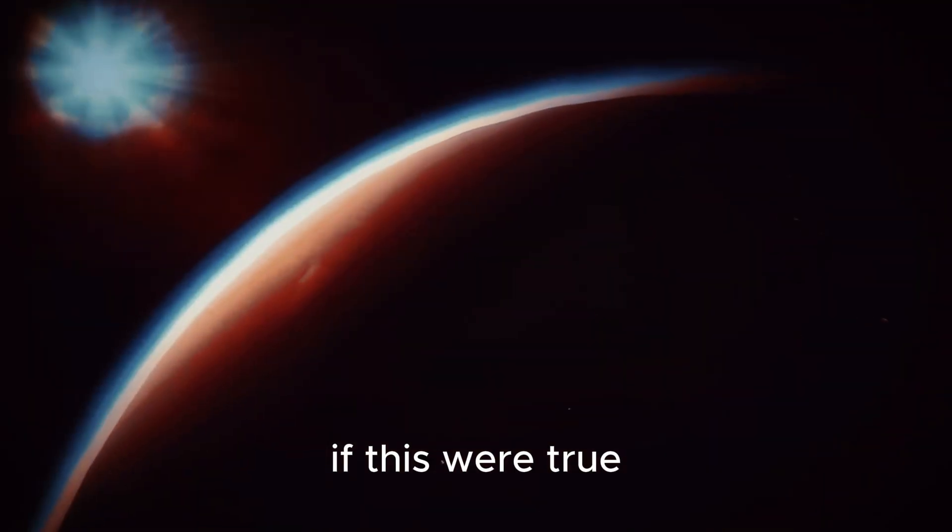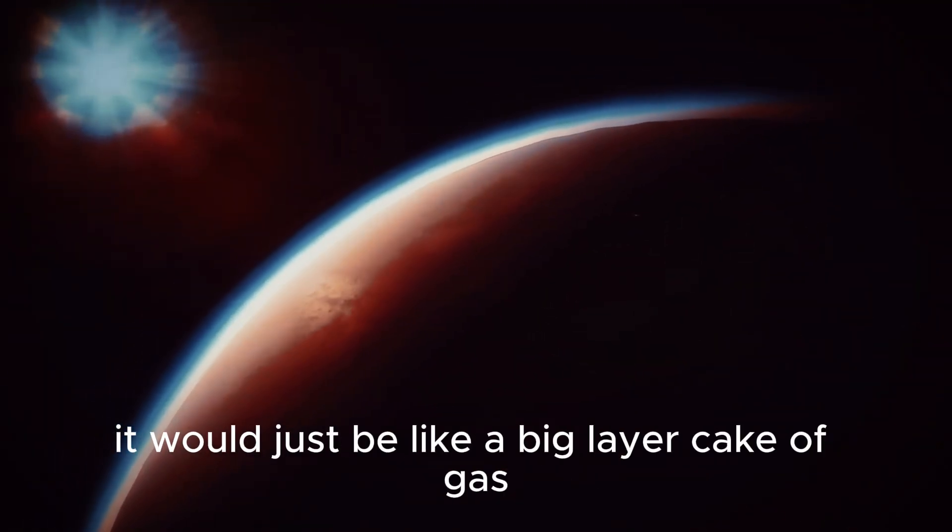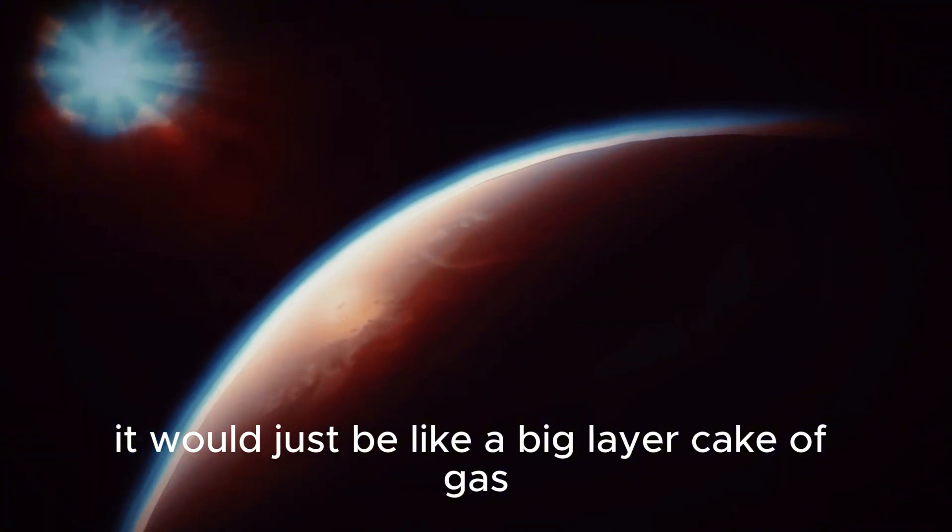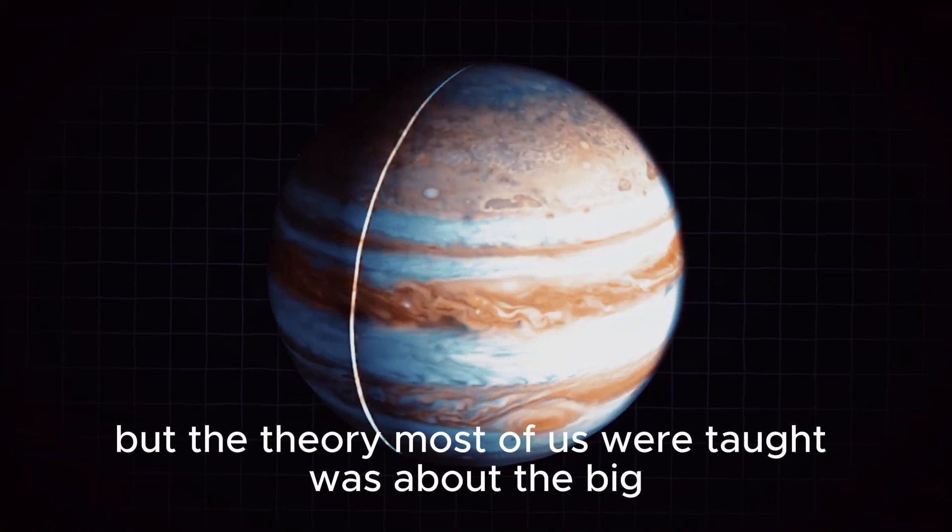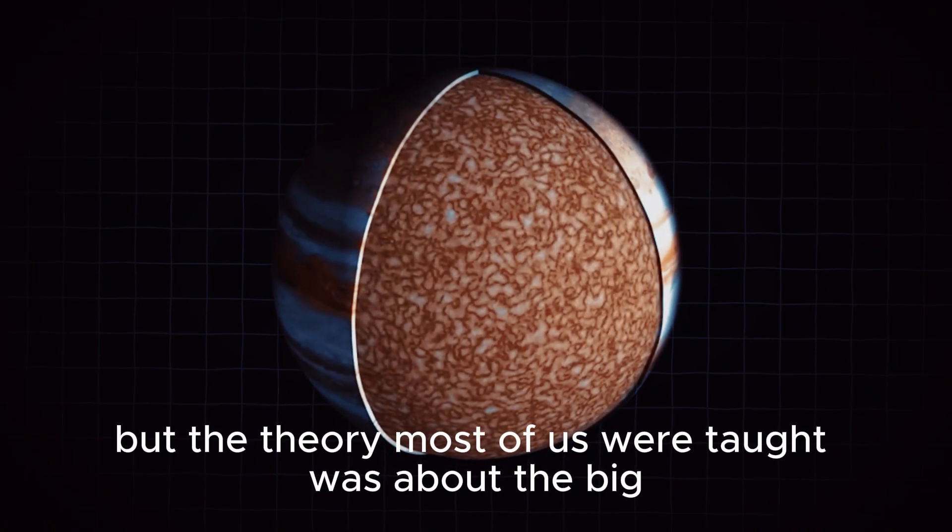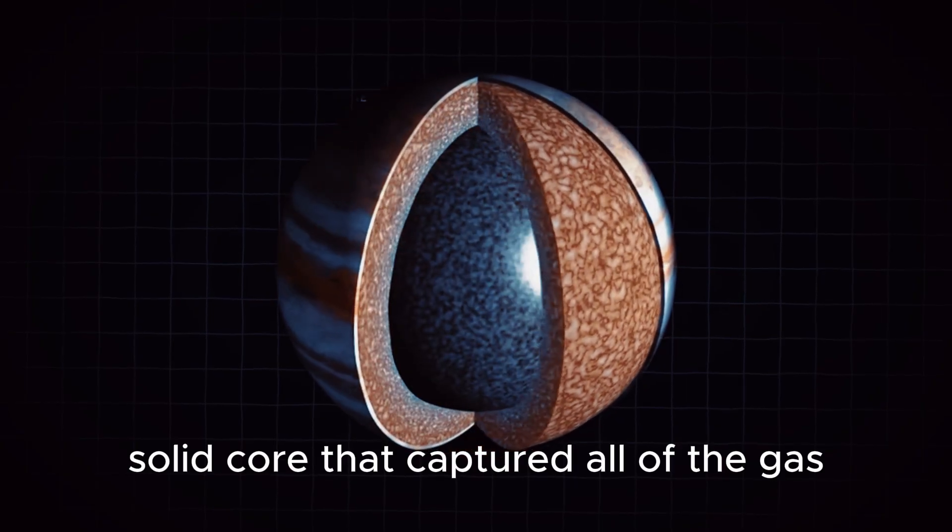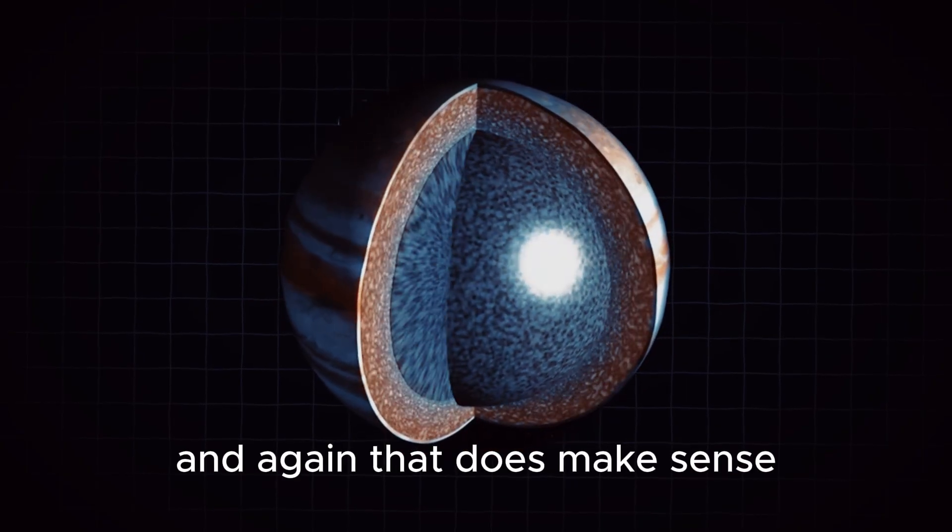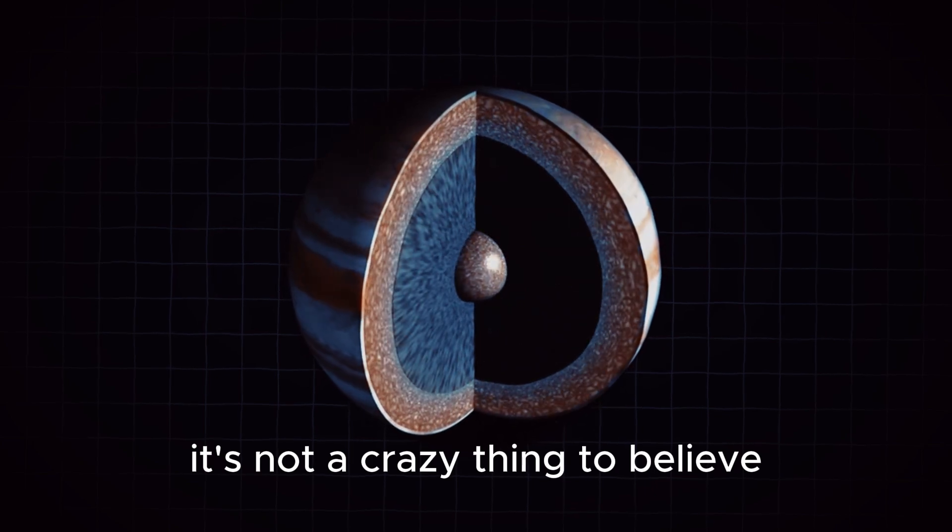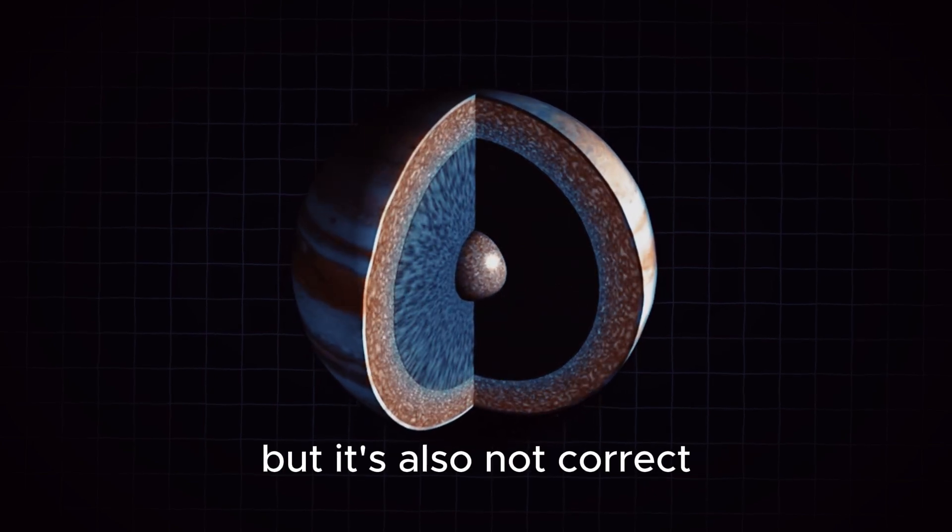If this were true, then Jupiter wouldn't really have a core at all. It would just be like a big layer cake of gas. But the theory most of us were taught was about the big solid core that captured all of the gas. And again, that does make sense. It's not a crazy thing to believe, but it's also not correct.